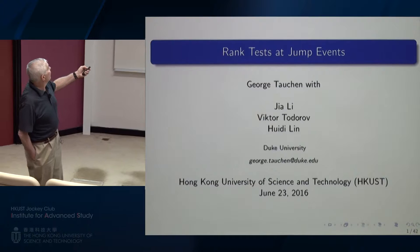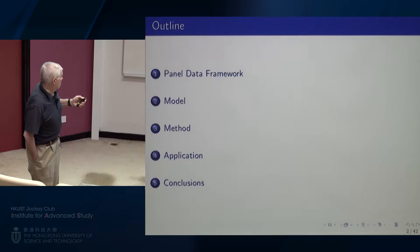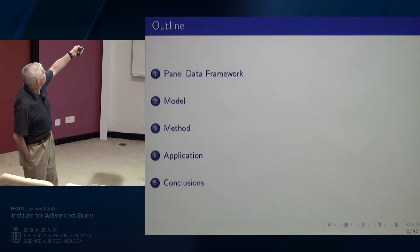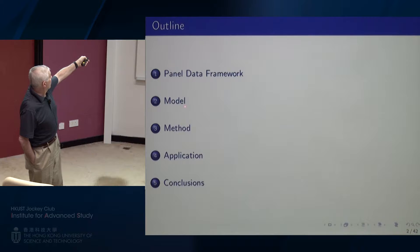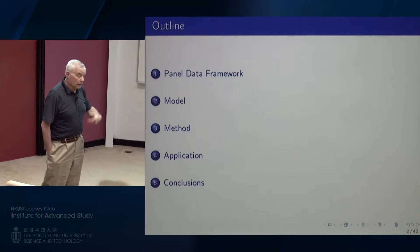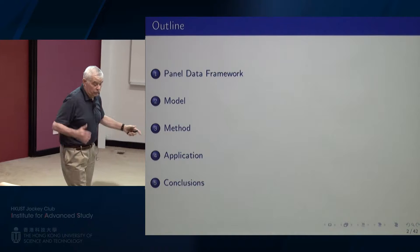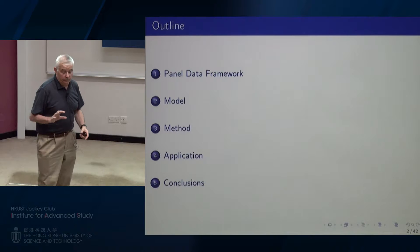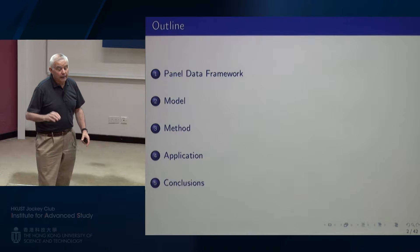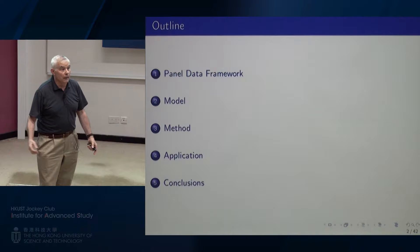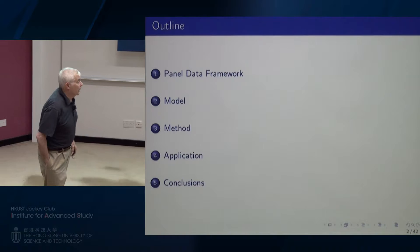So let me tell you what this is about. This is a standard outline. I'm going to start with the panel data framework, which is really what's new in the paper. Then we have models, and then the method — how do you actually do what we're talking about? It's really simple: just a combination of some simple MATLAB scripts. The statistical theory is hard, but we did the theory in order to make what the user does on the data reasonably simple. That's the job of the statistician or the econometrician.